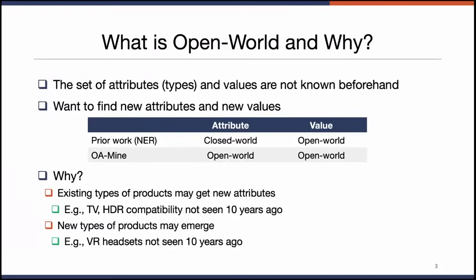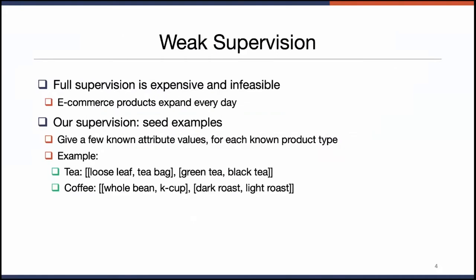You may ask why we want the open-world setting. The most important reason is that in the e-commerce world, the product catalog is forever expanding. For existing types of products, they may get new attributes — for example, when you were shopping for a TV 10 years ago, HDR compatibility was not something you considered, but it's very important nowadays. And we may also get new types of products; for example, VR headsets were not a thing 10 years ago.